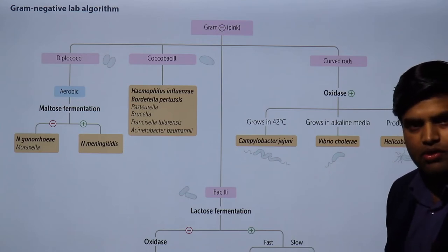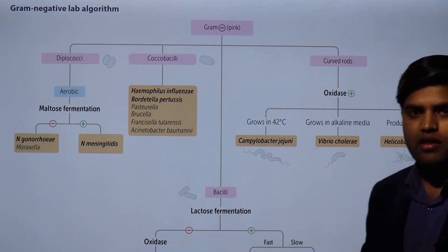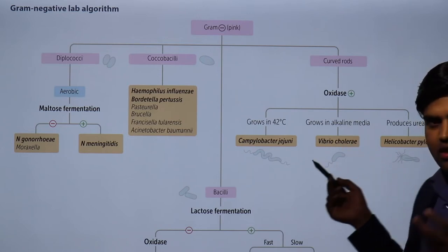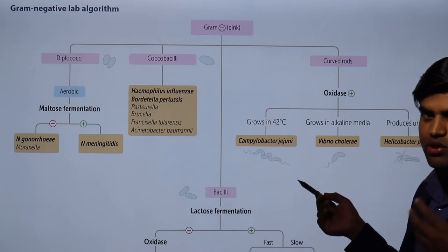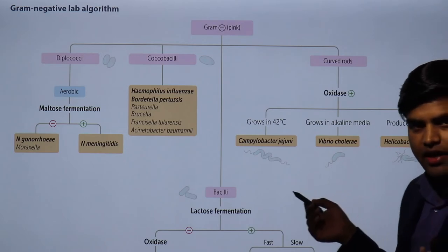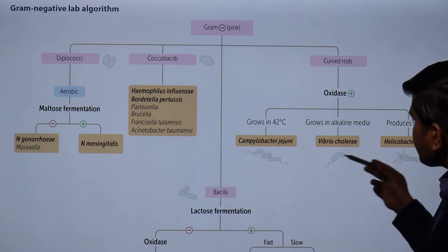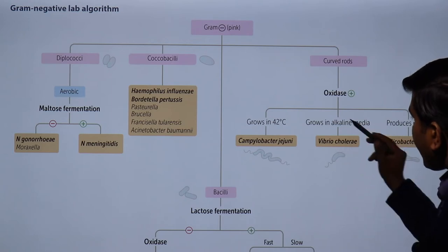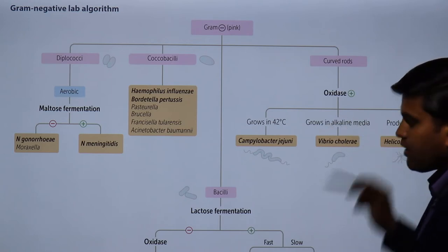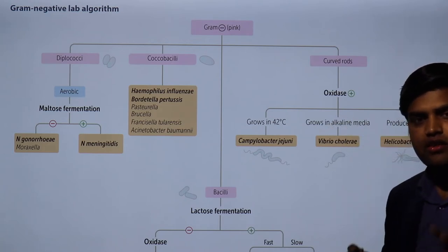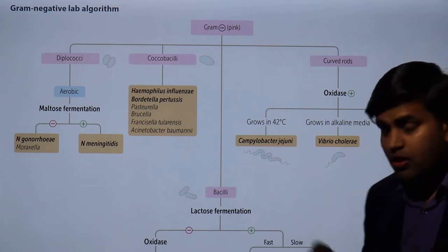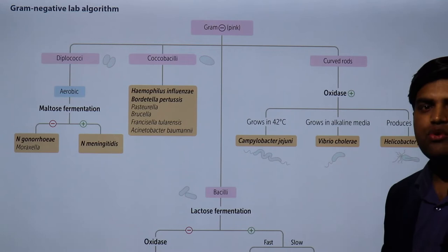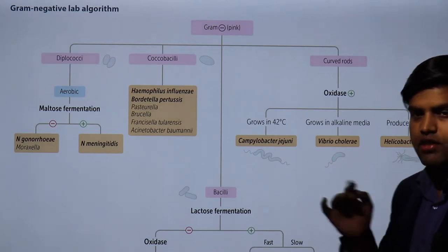By increasing the temperature of the incubator to 42°C, if an organism is growing, it is Campylobacter jejuni. Vibrio cholerae causes cholera with shooting mortality. You can see it in the hanging drop preparation. It is responsible for cholera outbreaks and grows in alkaline media — it grows easily in alkaline peptone water. Campylobacter jejuni and Helicobacter pylori do not grow in alkaline media.